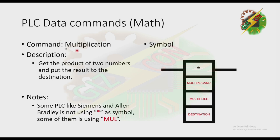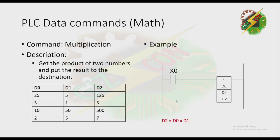Next is Multiplication — it gets the product of two numbers and puts the result to the destination. This is the symbol for this command. If X0 is energized, the product of D0 and D1 will be moved to D2.